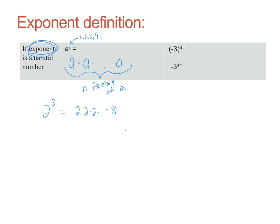A couple of examples. Negative three to the fourth power means four negative threes: (-3) × (-3) × (-3) × (-3). Working left to right: (-3)×(-3) = 9, times (-3) = -27, times (-3) = positive 81. The second problem might look the same but it's not — it's the negative of four threes multiplied together, so the answer is negative 81.